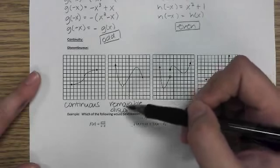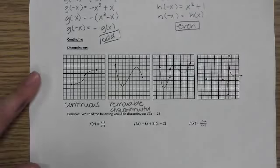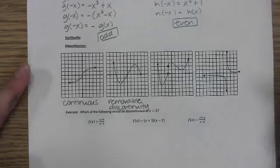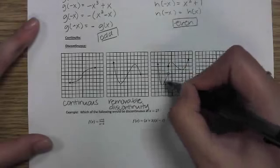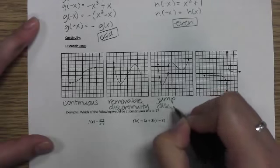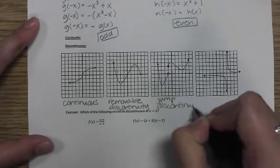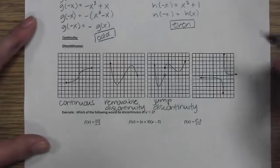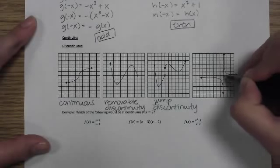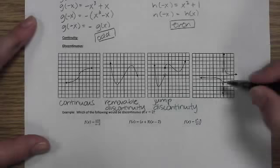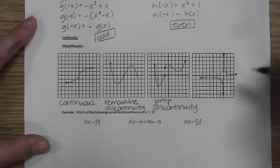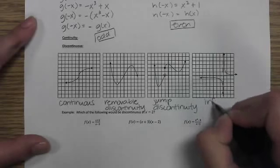The idea of removable discontinuity is that if you defined the graph with a piecewise function, you could go back and define a point right in that hole, essentially plugging it. For a jump discontinuity, you'd have to pick up your pencil and jump to a new location — there's always a gap. And on a rational graph with an asymptote, the two curves get closer and closer to the asymptote with the distance approaching zero — this is called infinite discontinuity.